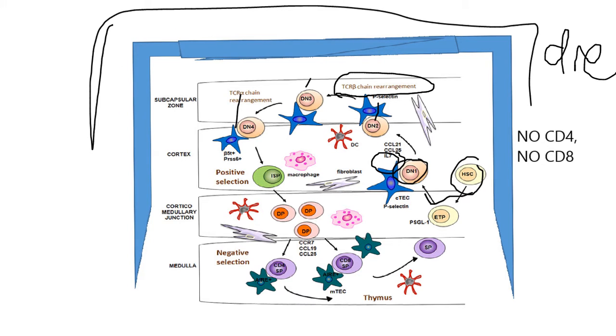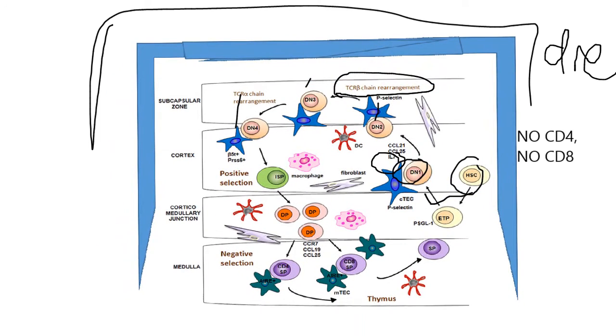Now when this beta chain is produced, it's shipped to the surface of the cell. But it's shipped up with a fake alpha chain. So here's my beta chain. And then it gives me this fake alpha chain. I'm going to put it in red. So this is a fake alpha chain. This is also called the invariant chain or the pre-T alpha.